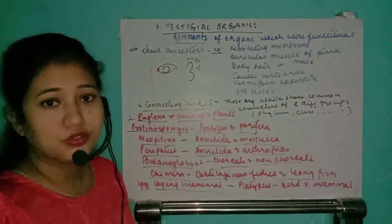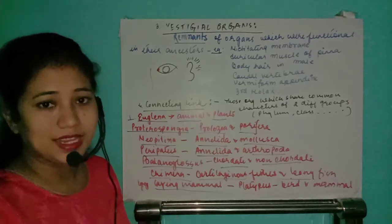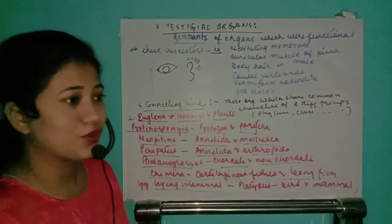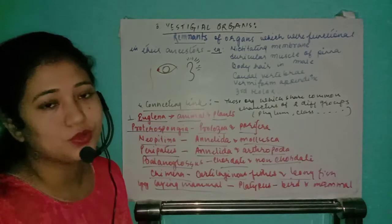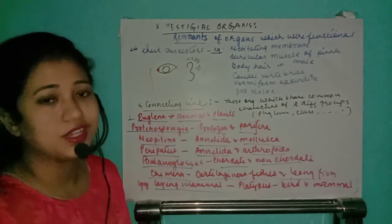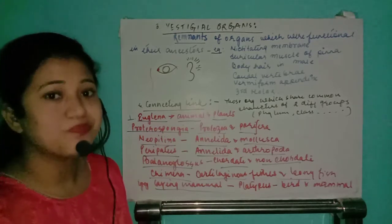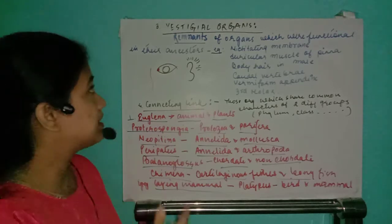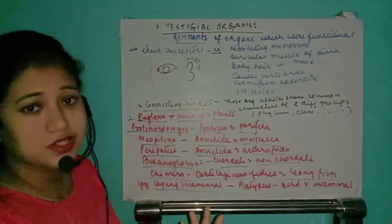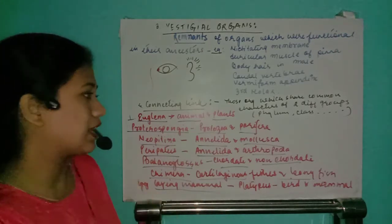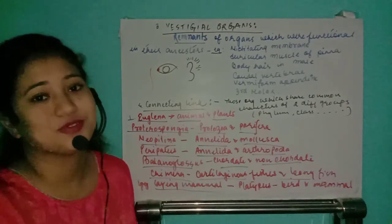That's all about vestigial organs and connecting links. I hope you understood. I will meet you in the next video — that's all about the examples of evidences of evolution: vestigial organs and connecting links. Thank you.